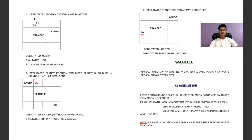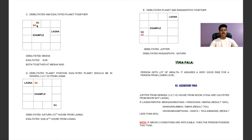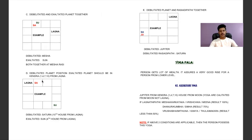Another type of Neechabhanga Raja Yoga: a debilitated and an exalted planet sitting together. For example, if your ascendant is Cancer and Saturn and Sun are sitting together in Aries zodiac sign, that shows Neechabhanga Raja Yoga is happening. Another variation: in a debilitated planet's position, an exalted planet should be in a Kendra — the 1st, 4th, 7th, or 10th house from Lagna.